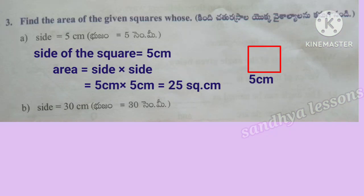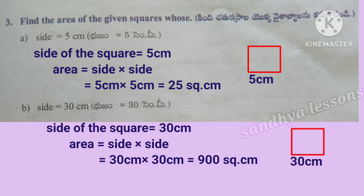Third problem: find the area of the given squares. A: side equals 5 centimeters. Area of a square equals side into side, that is 5 cm into 5 cm, which equals 25 square centimeters. B: side equals 30 centimeters. Area equals 30 cm into 30 cm, which equals 900 square centimeters.